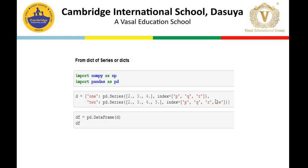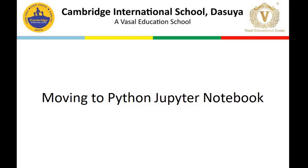This is a dictionary because it is enclosed in curly brackets. Inside this we have used two series. So we are using both series and dictionary together. The series has data values and an index. Finally, we convert the D variable to a data frame with the help of Pandas — the DataFrame method converts it into a two-dimensional object. With DF we print the result.